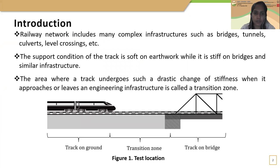The railway network is one of the main transportation systems among the four transportation modes, as it is economical and widely used all over the world. Therefore, special attention must be given in terms of construction, inspection, maintenance, and renewal work of railway infrastructure. A railway network includes many complex infrastructures such as bridges, tunnels, culverts, and so on. The area where the track undergoes a drastic change of stiffness when it approaches or leaves such infrastructure is called a transition zone.